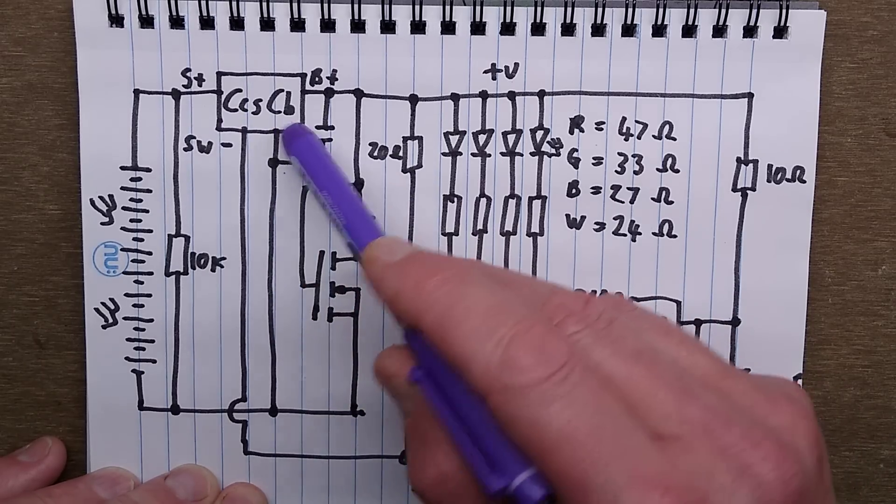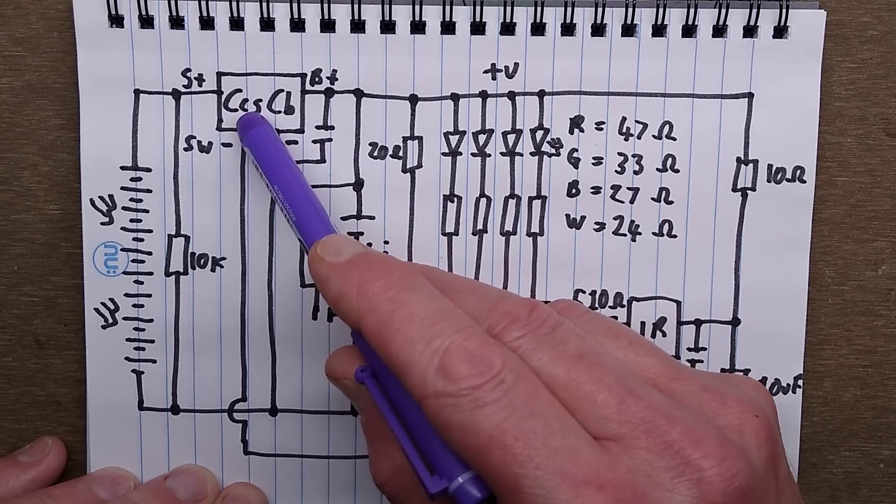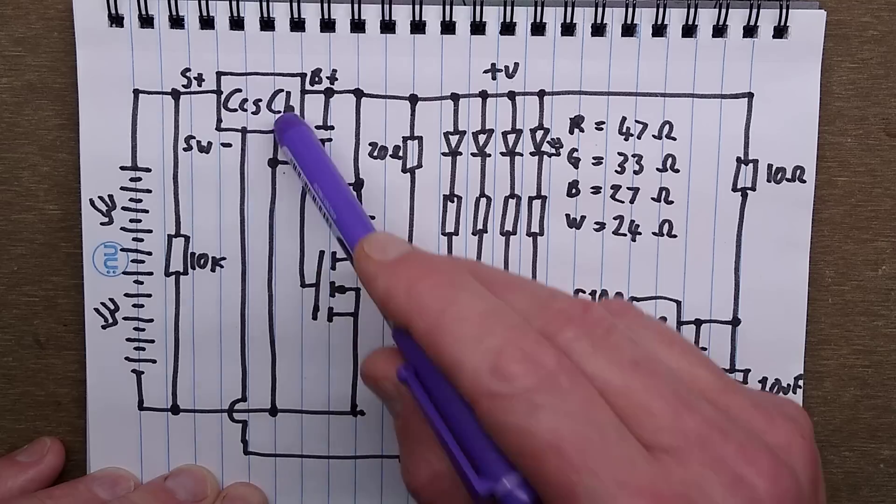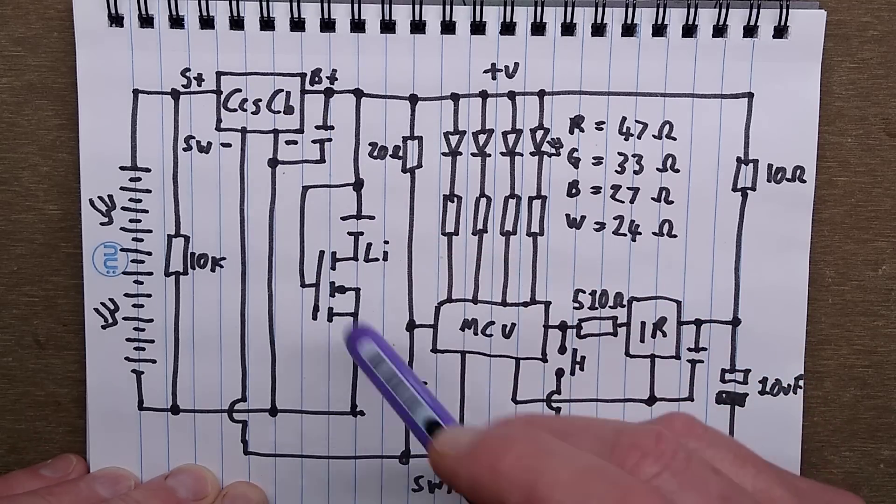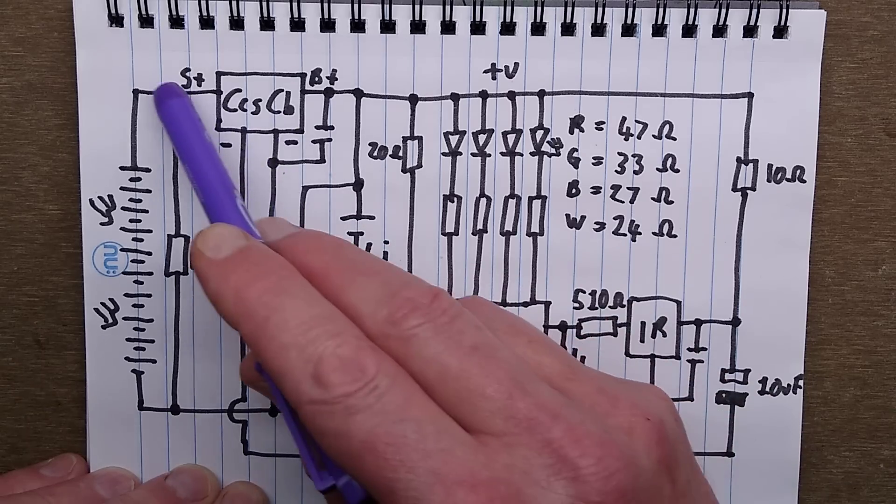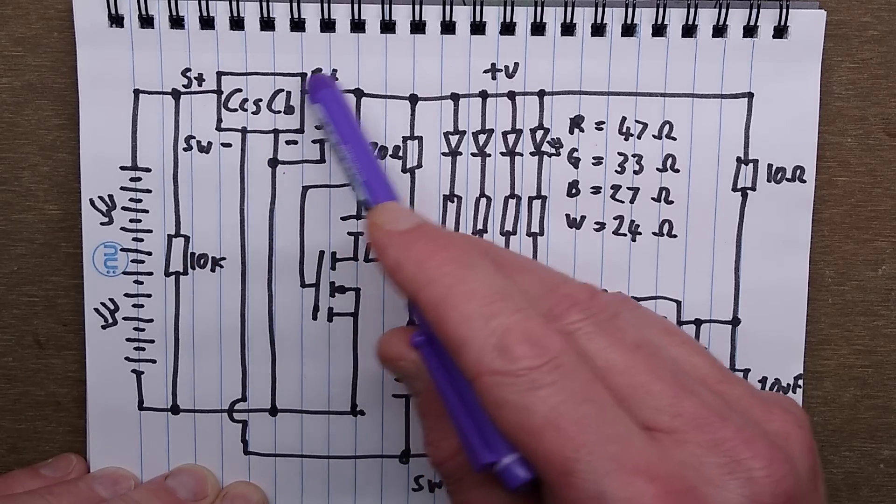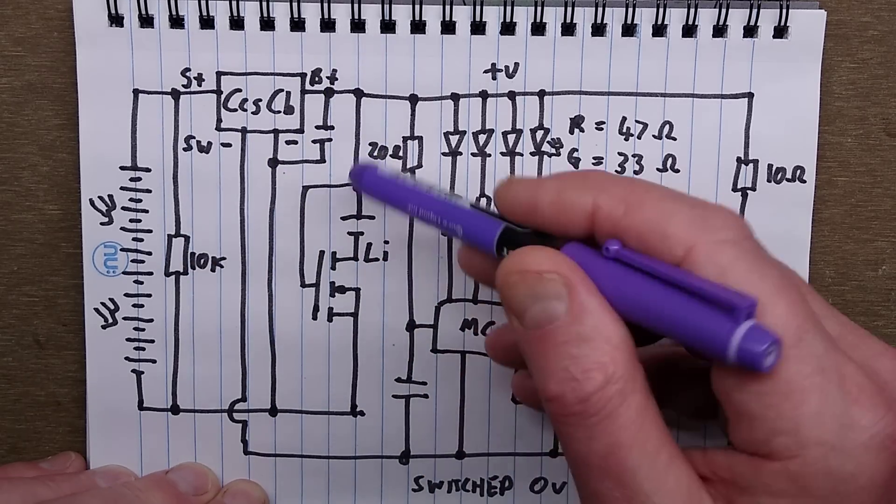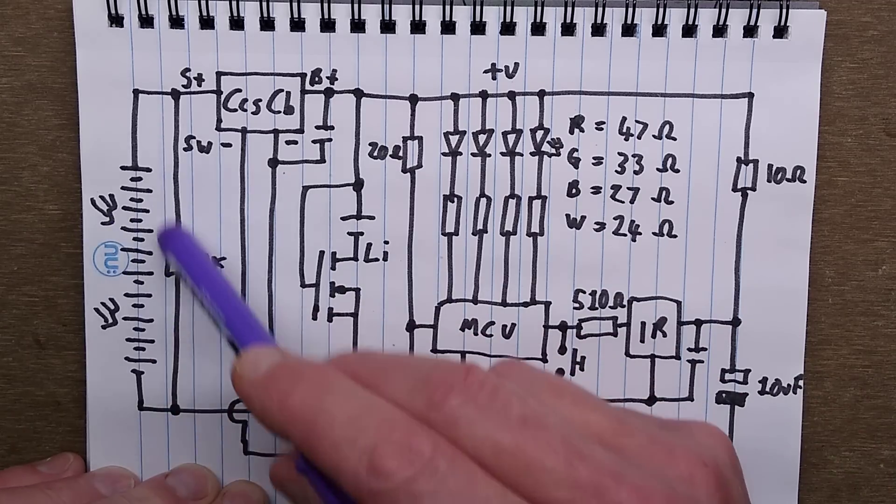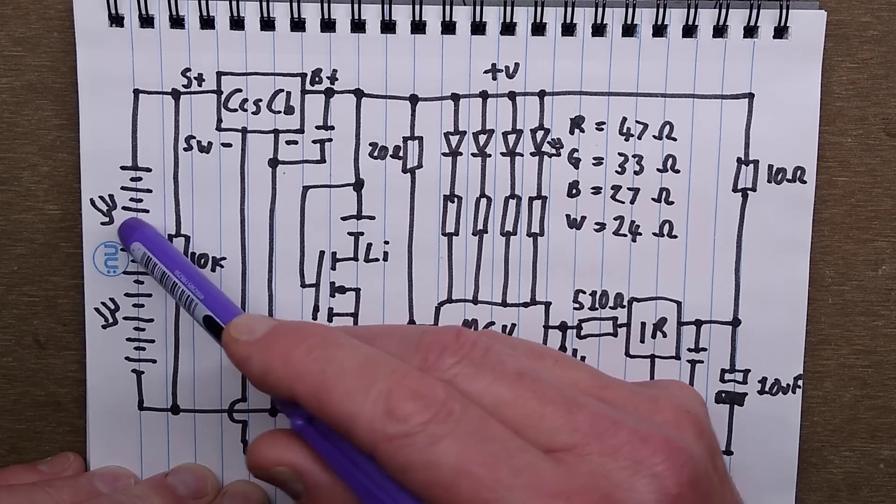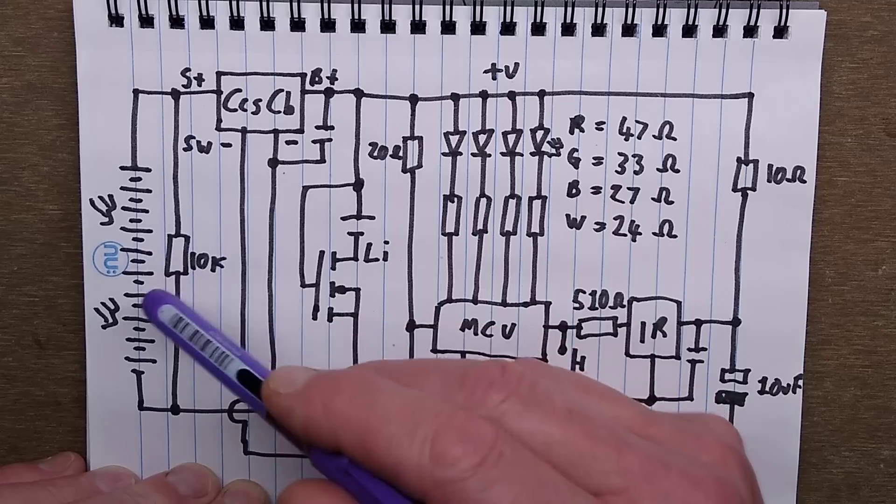Then there's this mysterious chip Capital C, small c, small s, capital c, small b. Not sure, not come across this, couldn't find something similar. But it has the solar panel going in as the output to the lithium cell which it controls the charge voltage. The charge current is purely limited by the ability of the solar panel to put charge out.